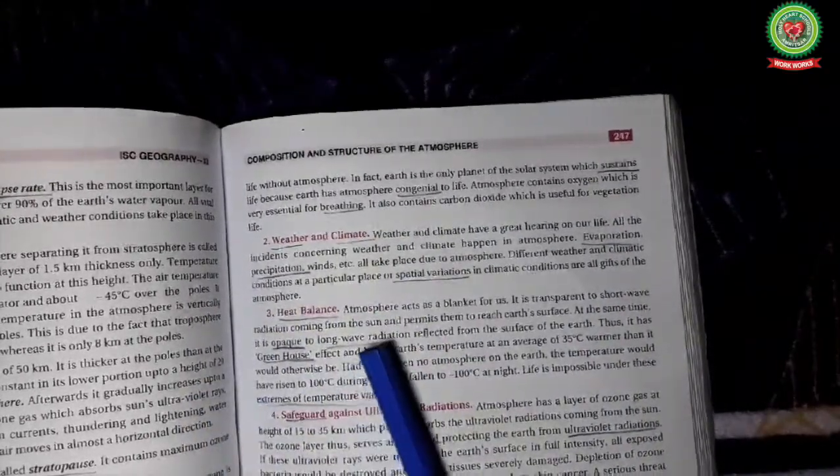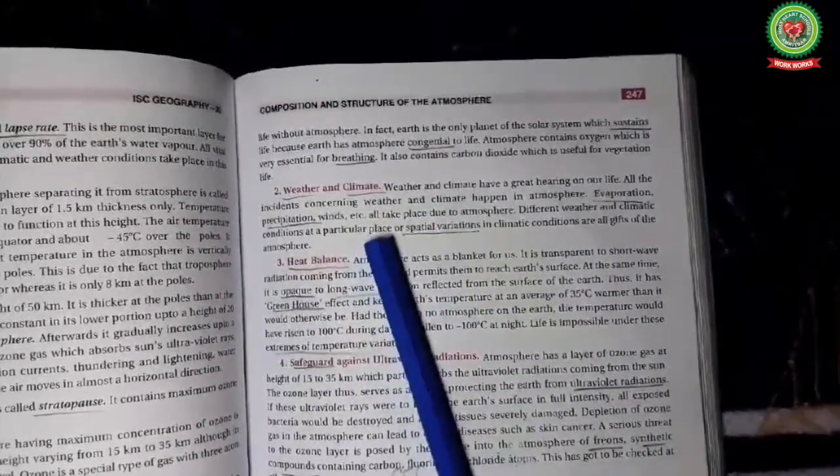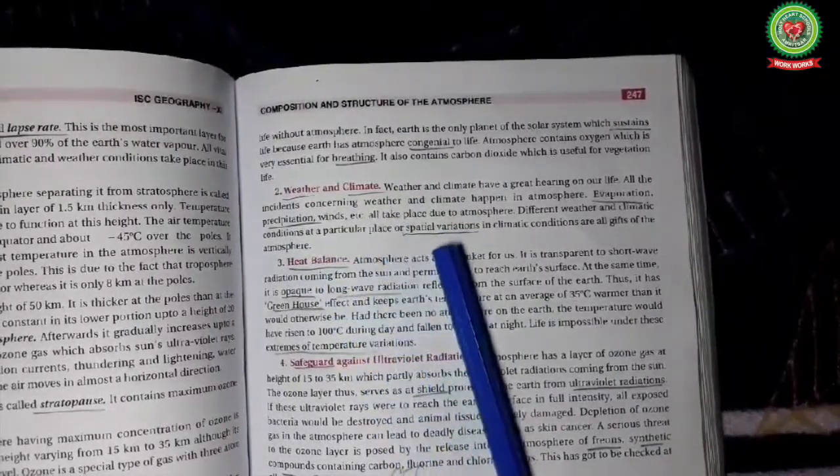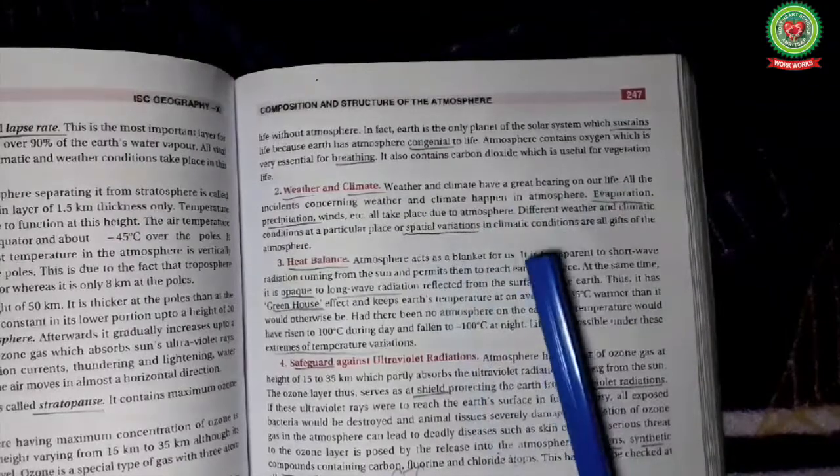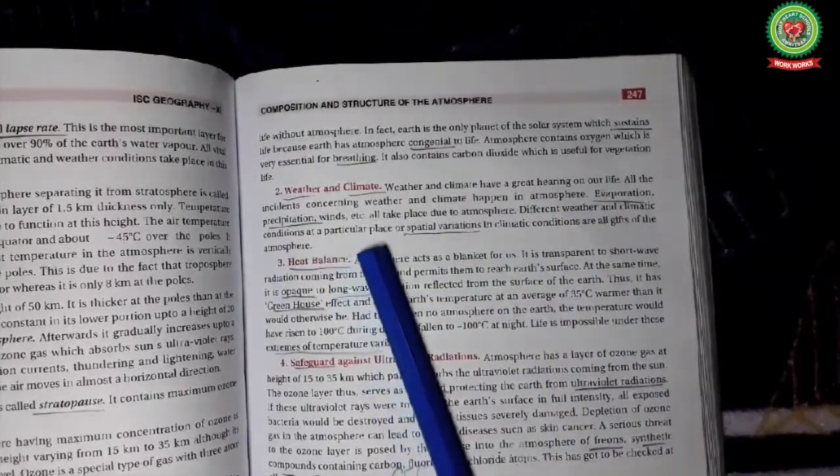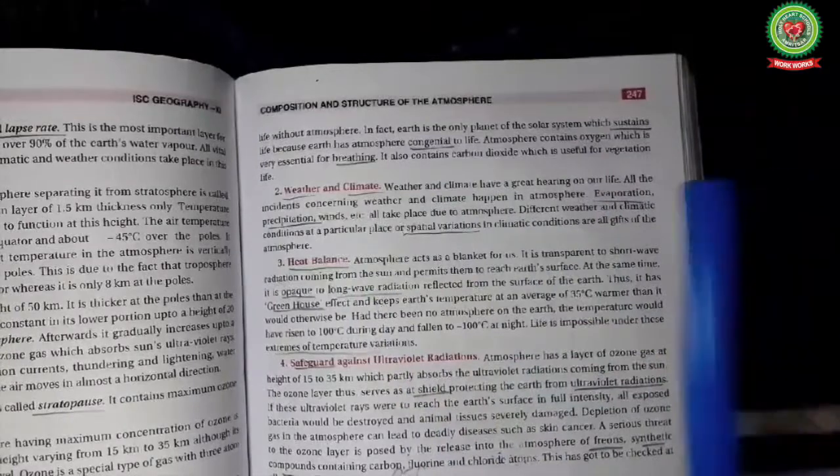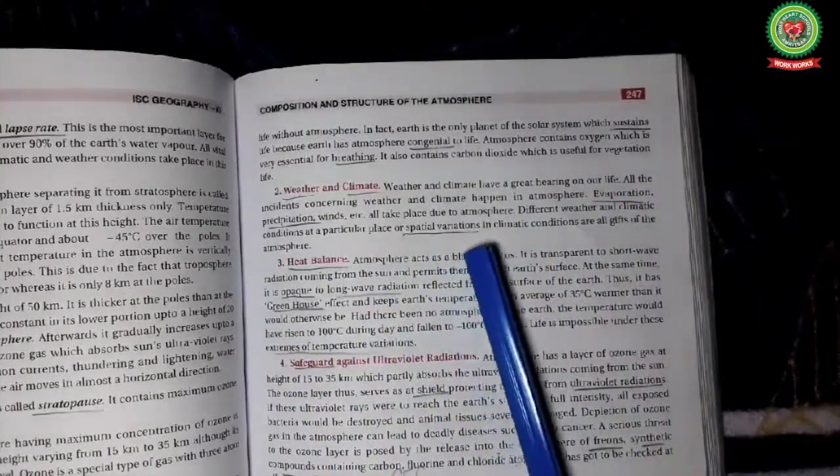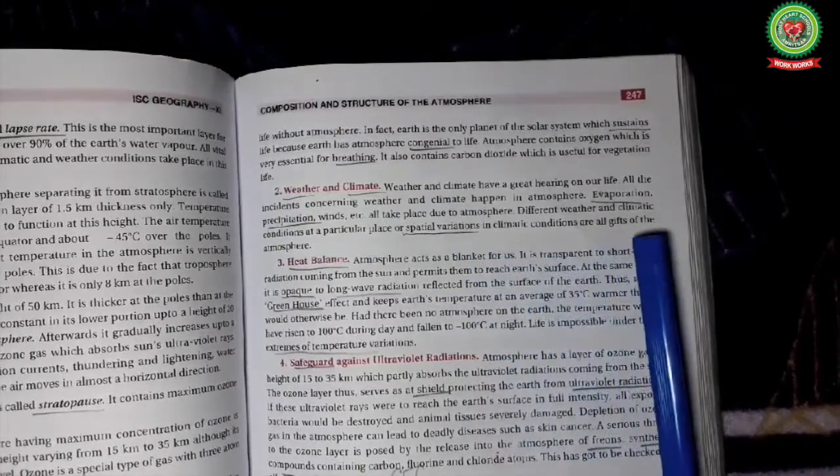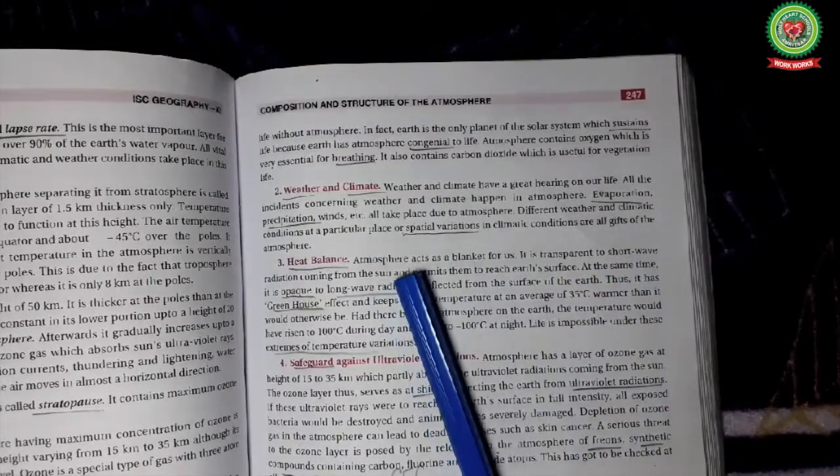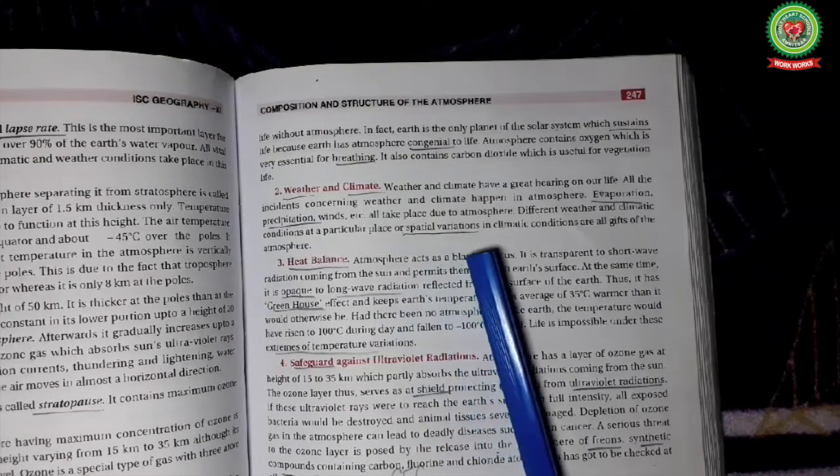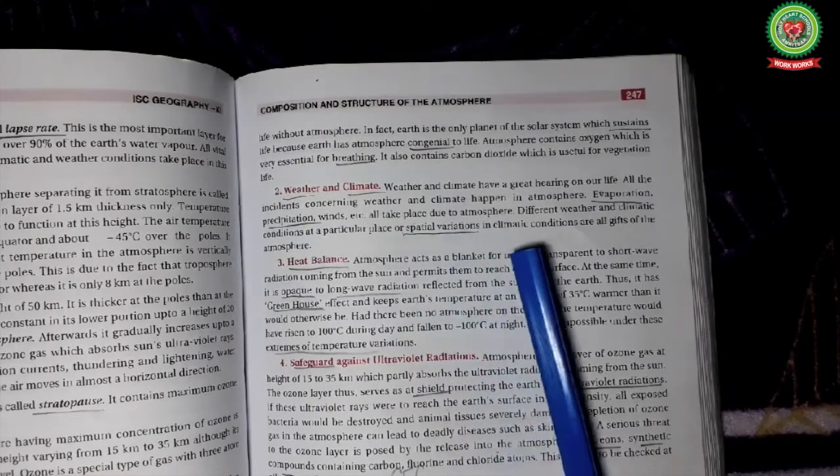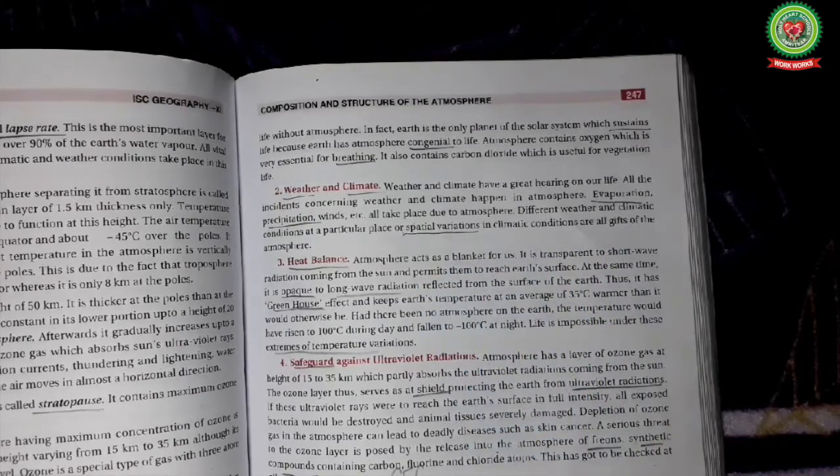Atmosphere also affects the weather and climate. All the weather phenomena take place in atmosphere like evaporation, precipitation, winds, cloud formation, thunderstorm, lightning. Different weather and climate conditions at a particular place or spatial variation in climate conditions are all gifts of atmosphere.